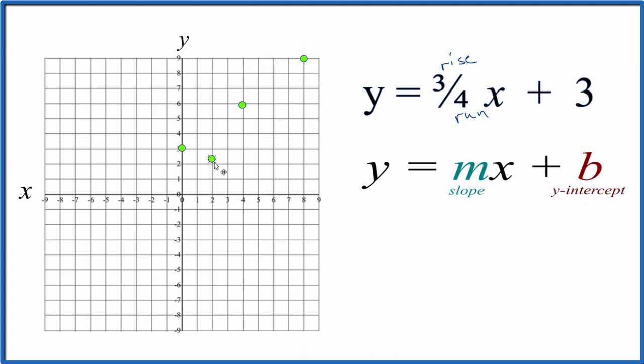We could also go in the opposite direction. We could go down one, two, three, and to the left one, two, three, four. That would also be on our line.